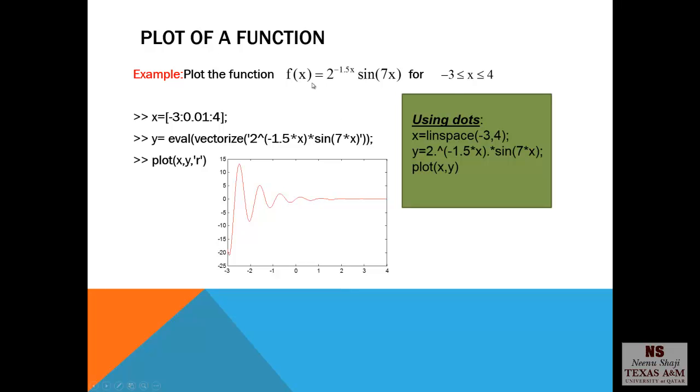Let's have a look at this function here. We can plot this in two different ways. First is, let's discuss the dots method. So you define x using the linspace command from negative 3 to 4. Then define the function as given in the question with the dots before every power or exponentiation, then multiplication and division. Then plot x comma y.